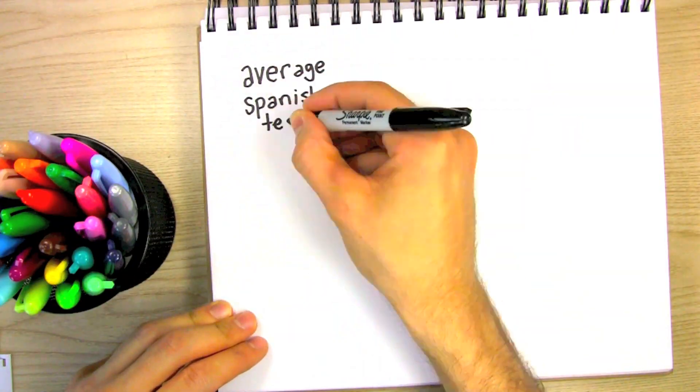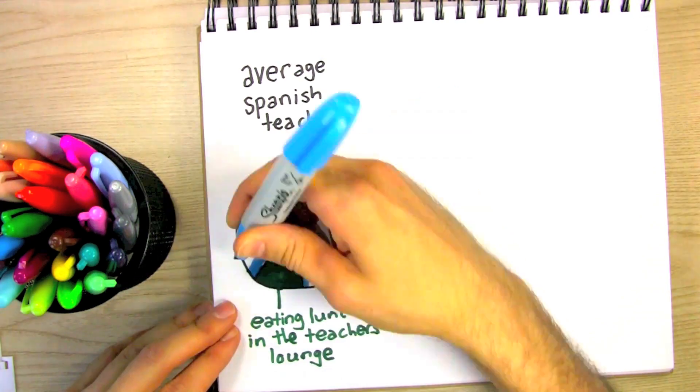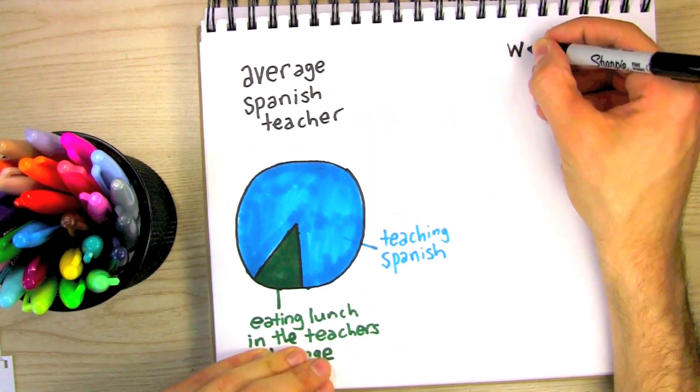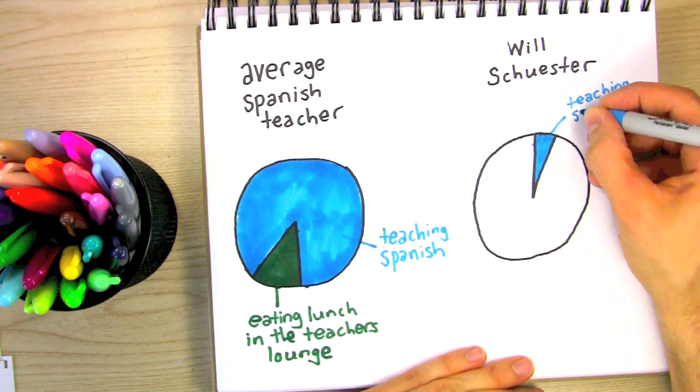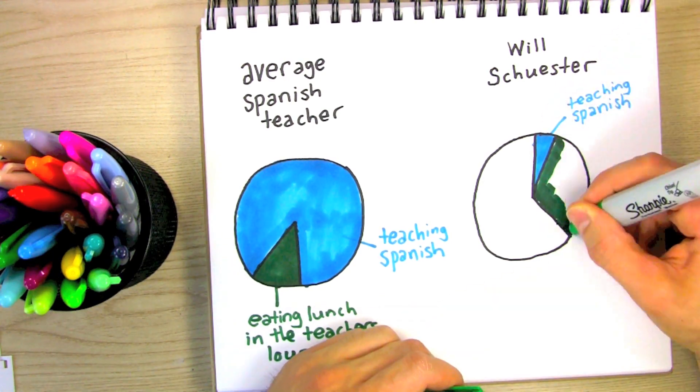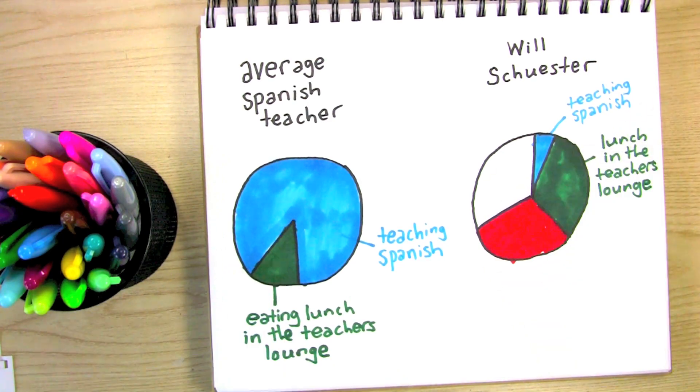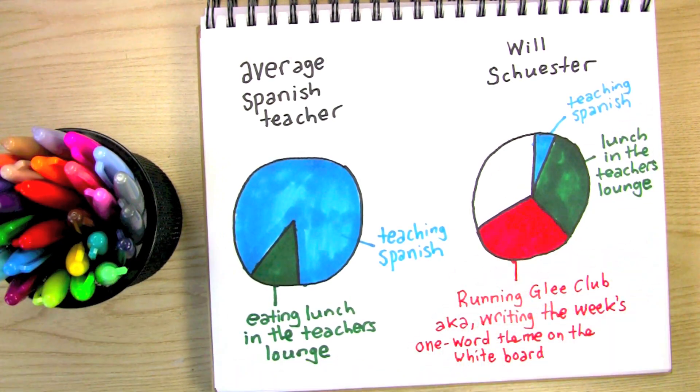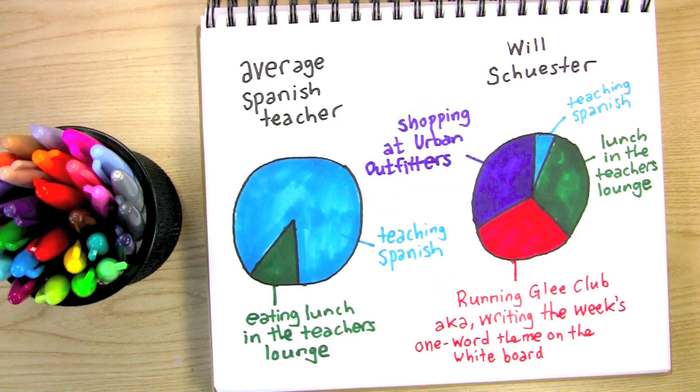So the average Spanish teacher spends 10% of his time eating lunch in the teacher's lounge and 90% teaching Spanish. Will Schuster, on the other hand, spends only 2% of his time actually teaching Spanish, while also spending 30% eating lunch in the teacher's lounge, and 30% running Glee club, and 38% shopping for skinny ties and form-fitting vests.